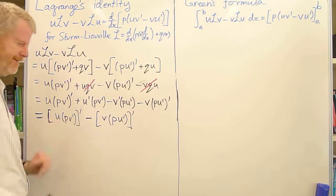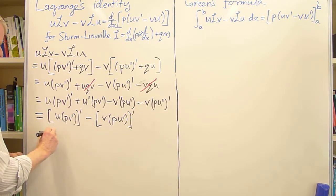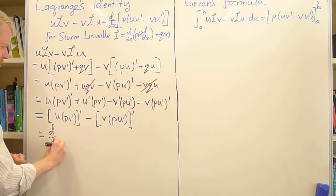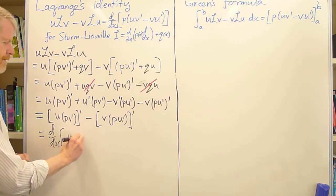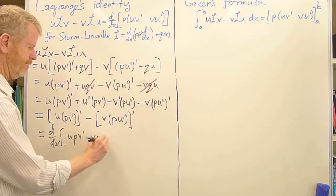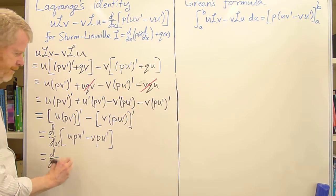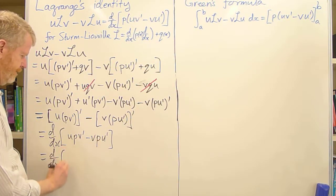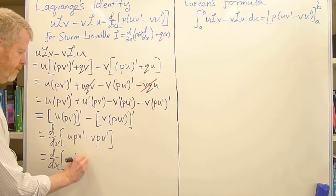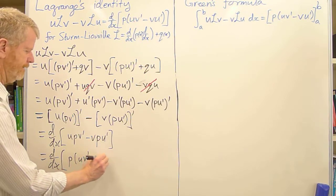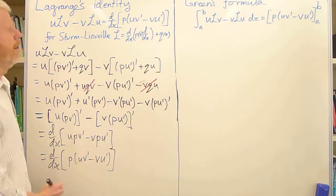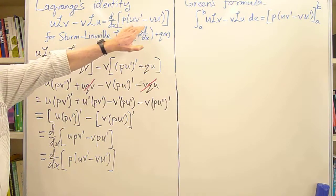Okay, now both of these things, they're derivatives. So let's write that as d/dx of upv' minus vpu'. And recognizing the common factor of p sitting inside there, this is p into [uv' - vu']. And that's precisely Lagrange's identity.